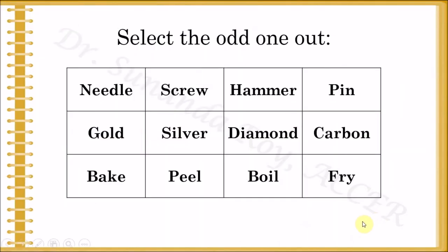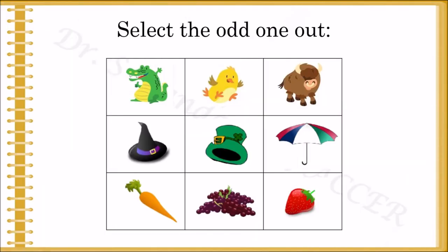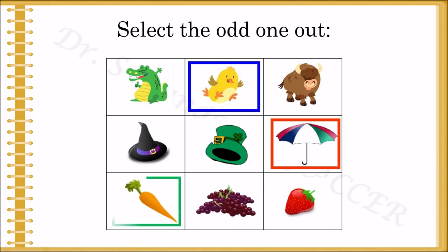The same technique can be used for other exercises. For example, 'Select the Odd One Out' — I've prepared a table the same way, but instead of letters I've put words, and students have to find the odd one out. As they give answers, you click and frames appear. Another variation is for younger children — instead of words, use pictures downloaded from the internet. Make sure they are copyright-free and royalty-free. As students give answers one by one, click and frames appear around the correct answers. It's the same frame technique.